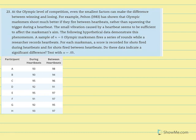This is the solution for number 23 of chapter 11. At the Olympic level of competition, even the smallest factors can make the difference between winning and losing.